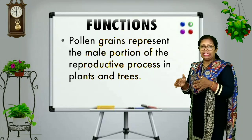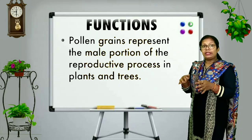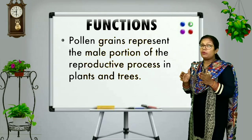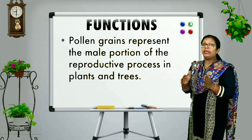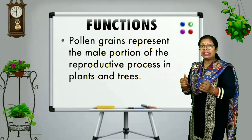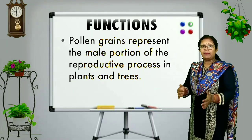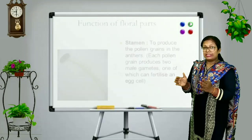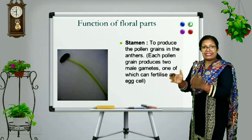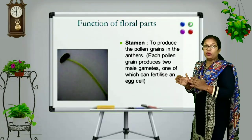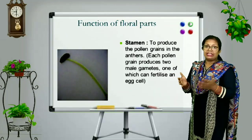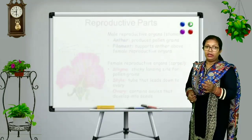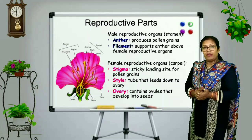Inside the anther, pollen sacs are found, and inside the pollen sacs many pollen grains are formed. These pollen grains are the male gametes because they contain the male nucleus. Therefore, stamens are the male reproductive part and are the necessary or essential parts of the flower because they participate in reproduction.